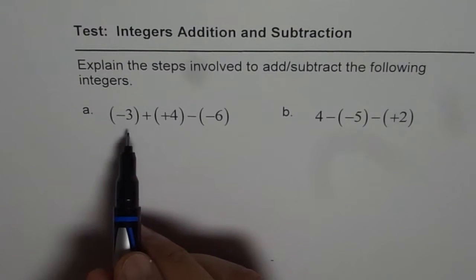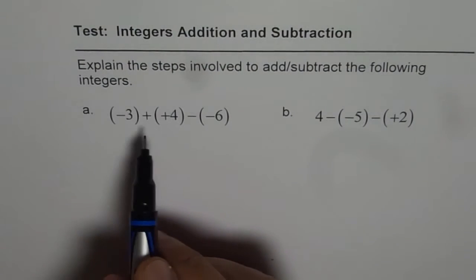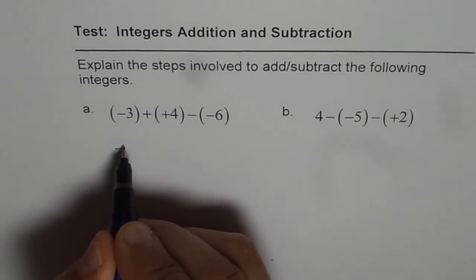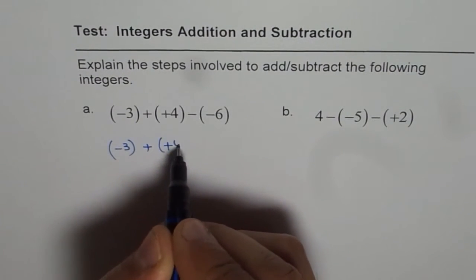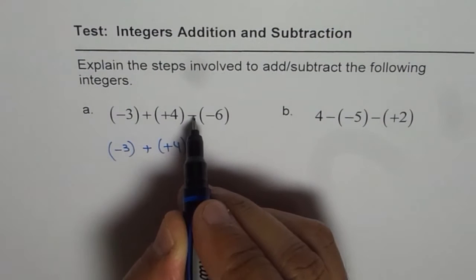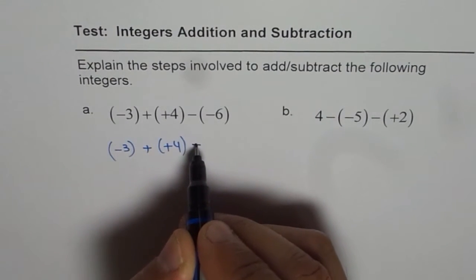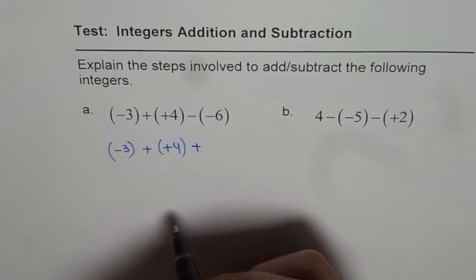So, let us first write this as addition. We can say minus three. There is already plus here. Plus, plus four. And minus minus really become plus of plus, right? The sign changes.